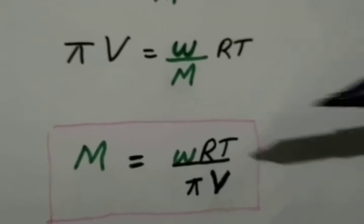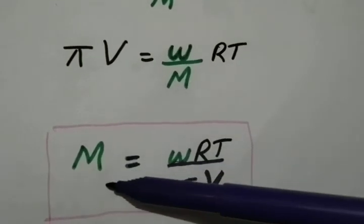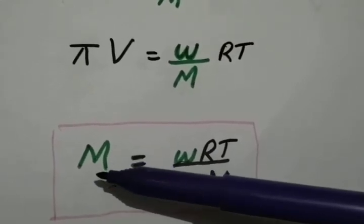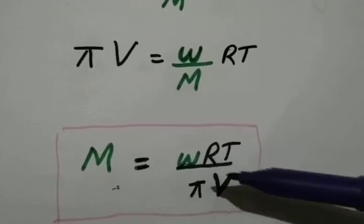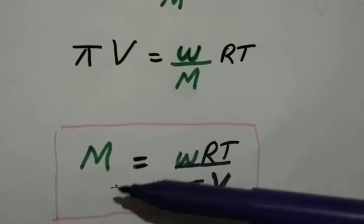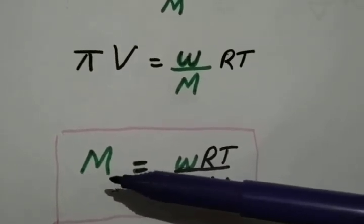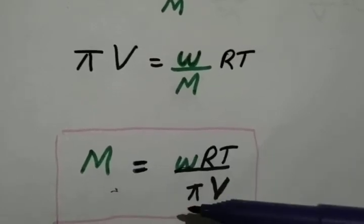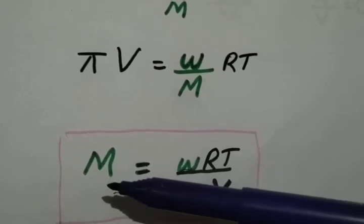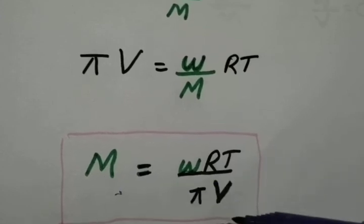By using this equation, we can calculate the molecular mass of any compound, just like polymers or any simple molecules. By measuring the osmotic pressure, we can calculate the molecular mass of the solute. If it is a polymer molecule also, we can calculate its molecular mass by using this equation.